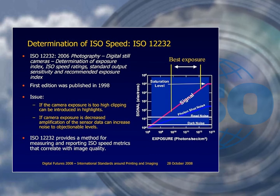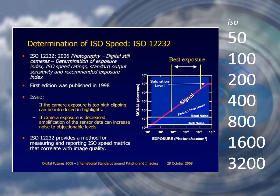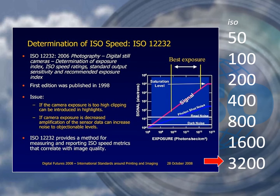ISO sensitivity used in digital photography works to a simple numbering formula that doubles in value from 50 to 3200 ISO and beyond. Therefore, a sensor will react to light twice as fast — for example at 100 ISO compared to 50 — and likewise up the table.